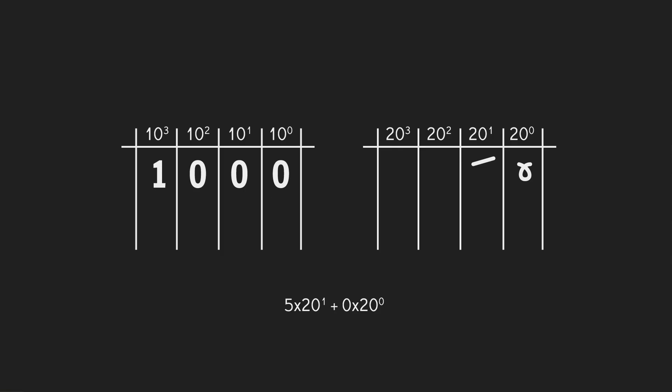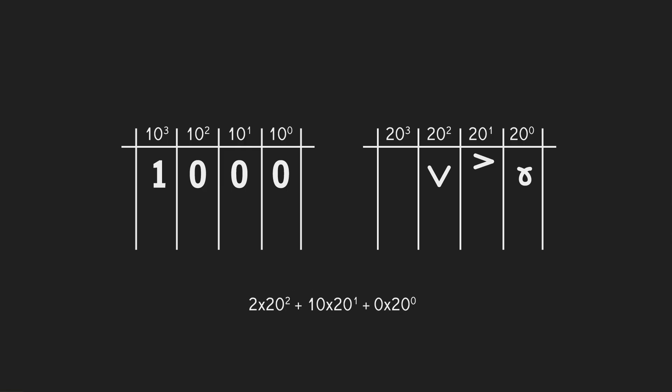A thousand in our system is 1,0,0,0 — 1×10³ + 0×10² + 0×10¹ + 0×10⁰. A thousand in KI numerals would be 2,10,0 — that is 2×20² + 10×20¹ + 0×20⁰, which equals a thousand. So basically the same as decimals, except we think in powers of 10 and they think in powers of 20.